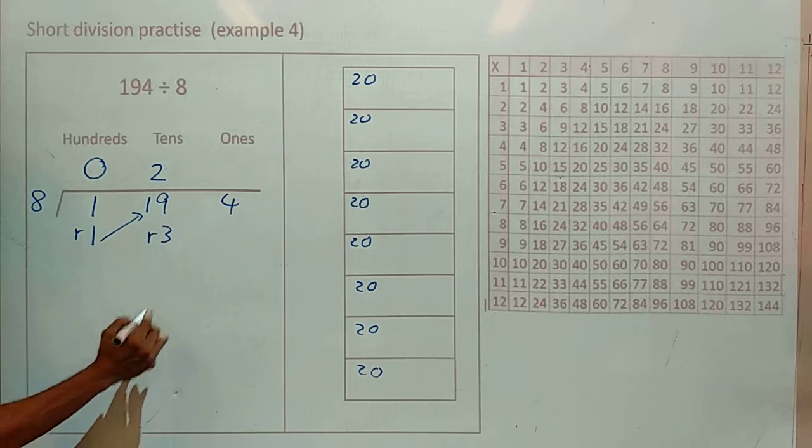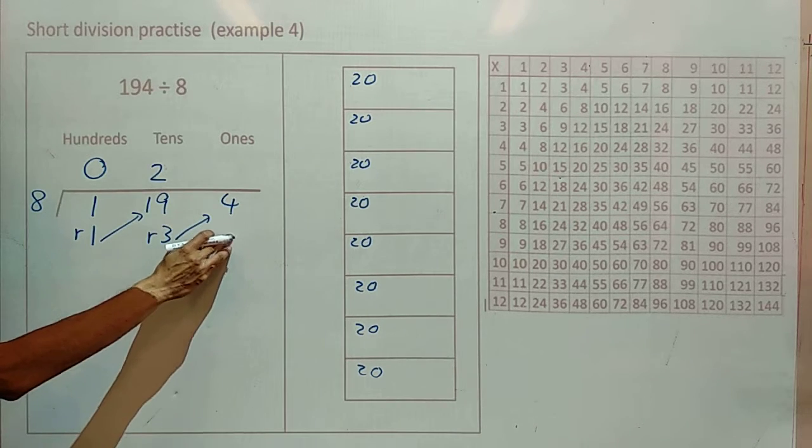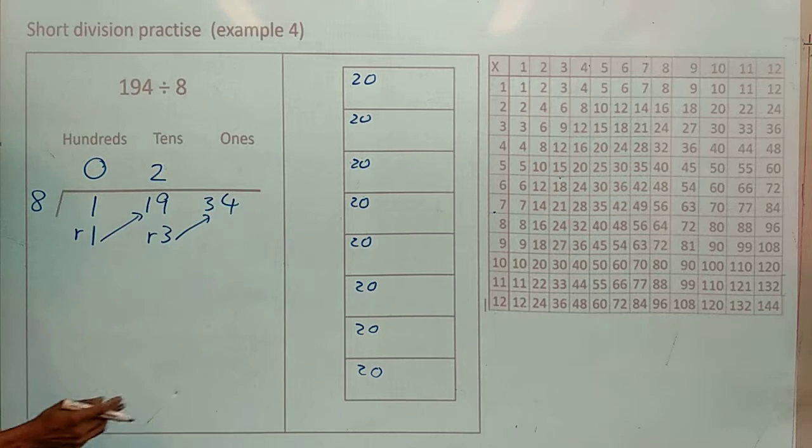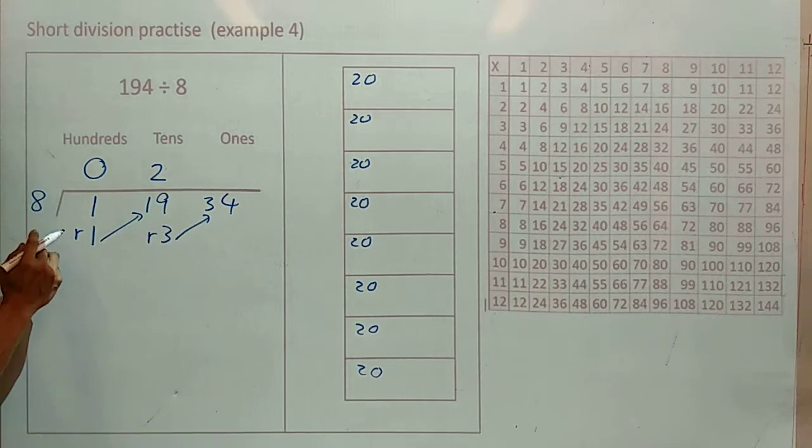So I have a remainder of 3, which I then transfer over to the ones column. Now 3 tens becomes 30. We now have 34. We're going to split 34 equally among 8.